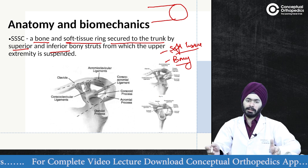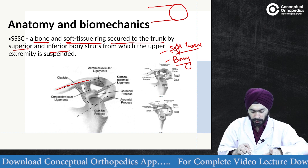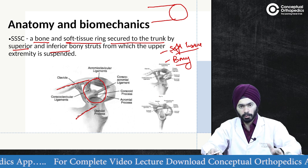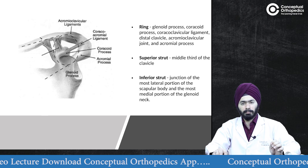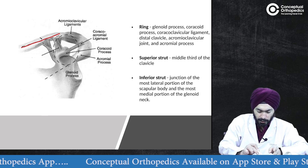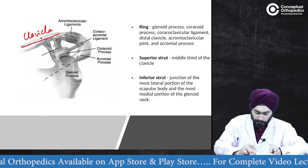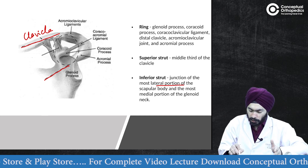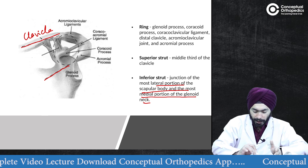The superior strut is formed by the clavicle. The inferior strut is formed by the lateral portion of the scapular body and the most medial portion of the glenoid. The ring is composed of both bony parts and soft tissue parts.